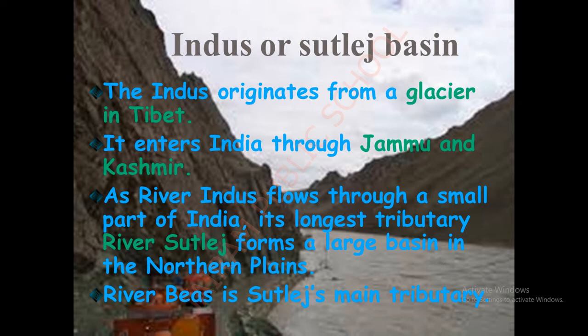First, let us see where the Indus basin originates. The Indus gets its starting point from a glacier in Tibet. We know that when snow melts into water, that is called a glacier. The Indus basin originates from a glacier located in Tibet. Second, it enters India through Jammu and Kashmir — that is its entry path into India.